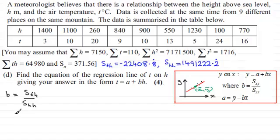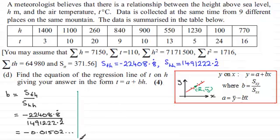So we've got our values for s_th. We worked it out up here. And it's minus 22408.8 recurring. And if we divide this then by s_hh, which is up here, we'll have 1491222.2 recurring. And if you do this calculation, what you end up with is minus 0.01502, and so on. I won't bother rounding this up at this stage. So that's our value for b.